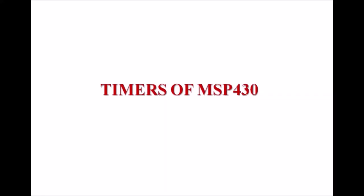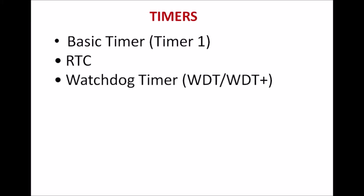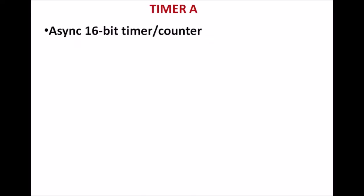Timers of MSP430. There are various timers available in MSP430. The first is Timer 1, which is called the basic timer. The second is RTC, real-time clock. Third is watchdog timer, that is WDT. The fourth is Timer A, then Timer B. Today we will discuss about Timer A.